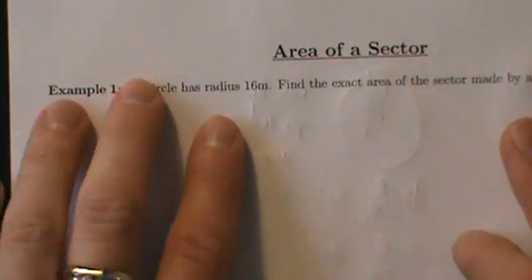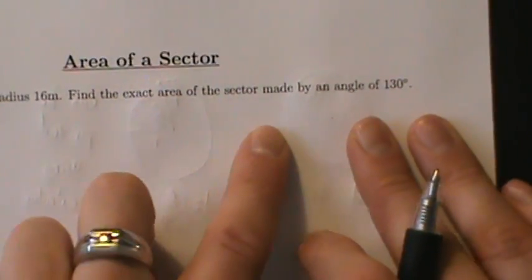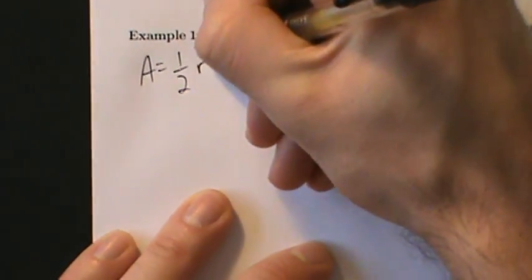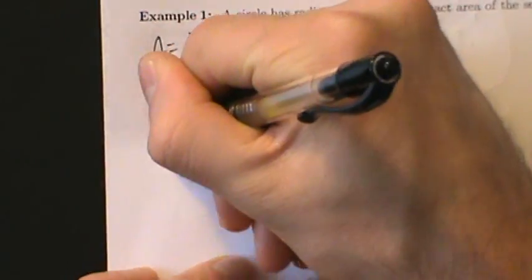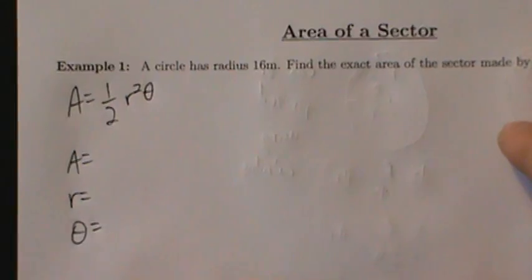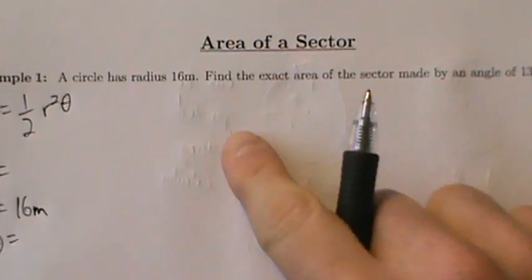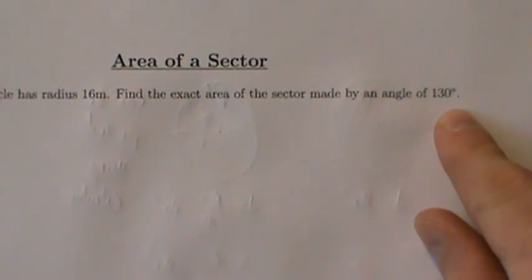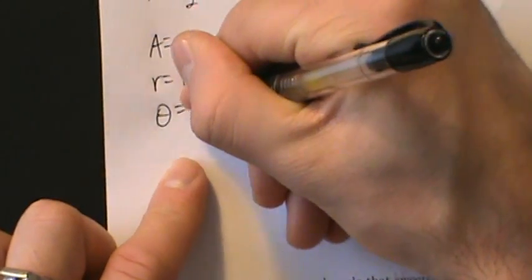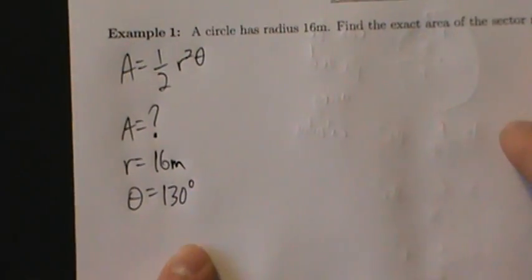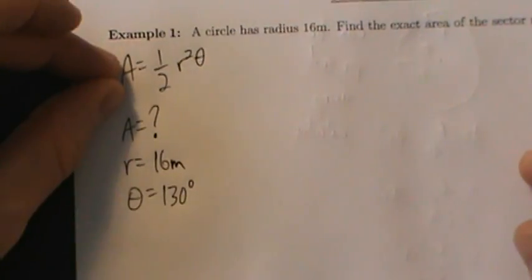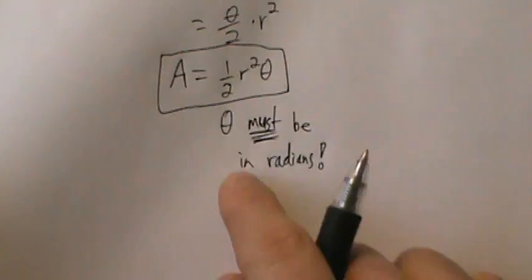Example 1: a circle has radius 16 meters. Find the exact area of the sector made by an angle of 130 degrees. Start by writing the formula: A equals one-half r squared theta. r is 16 meters. Theta is 130 degrees, but be careful — theta has to be in radians before we can use the formula. So we convert: multiply 130 degrees by pi over 180 degrees.